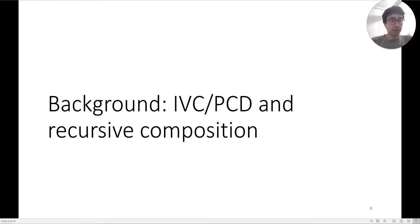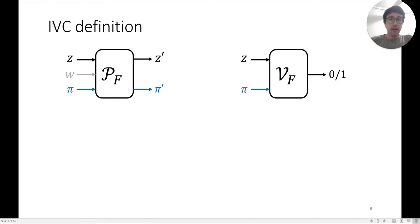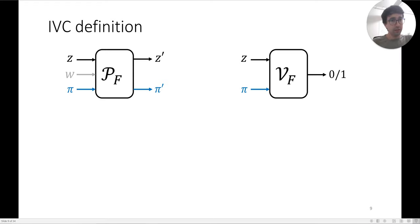Let's cover some background on previous IVC/PCD constructions and the method of recursive composition used to build them. In IVC, the prover takes in the previous state z and the previous proof π, along with potentially a witness, and outputs a new state z' and a new proof π'. The verifier takes in the current state and current proof and outputs zero or one depending on whether the entire computation so far has been performed correctly.